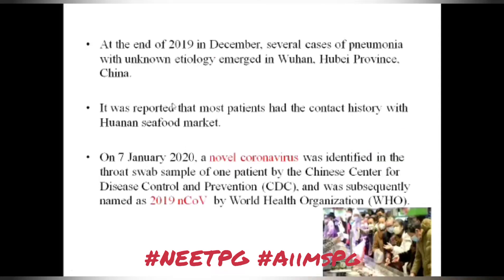At the end of 2019 in December, several cases of pneumonia with unknown etiology emerged in Wuhan, Hubei province, China, and it was reported that most patients had contact history with a seafood market. On 7th January 2020, a novel coronavirus was identified in a patient sample by the Chinese CDC and was subsequently named as 2019 novel coronavirus by WHO.